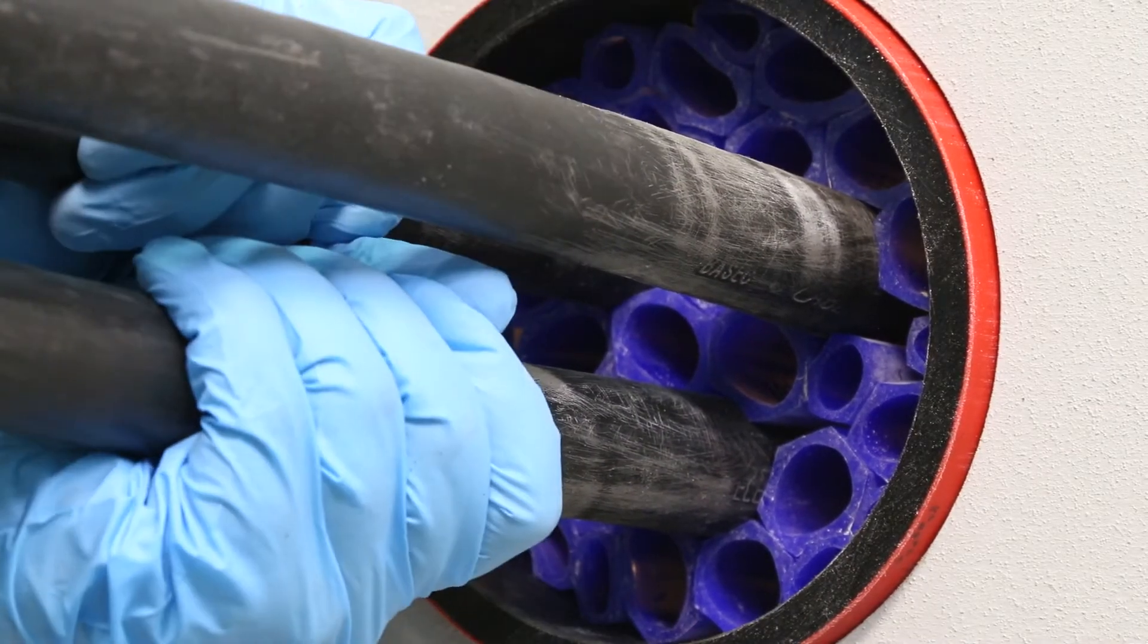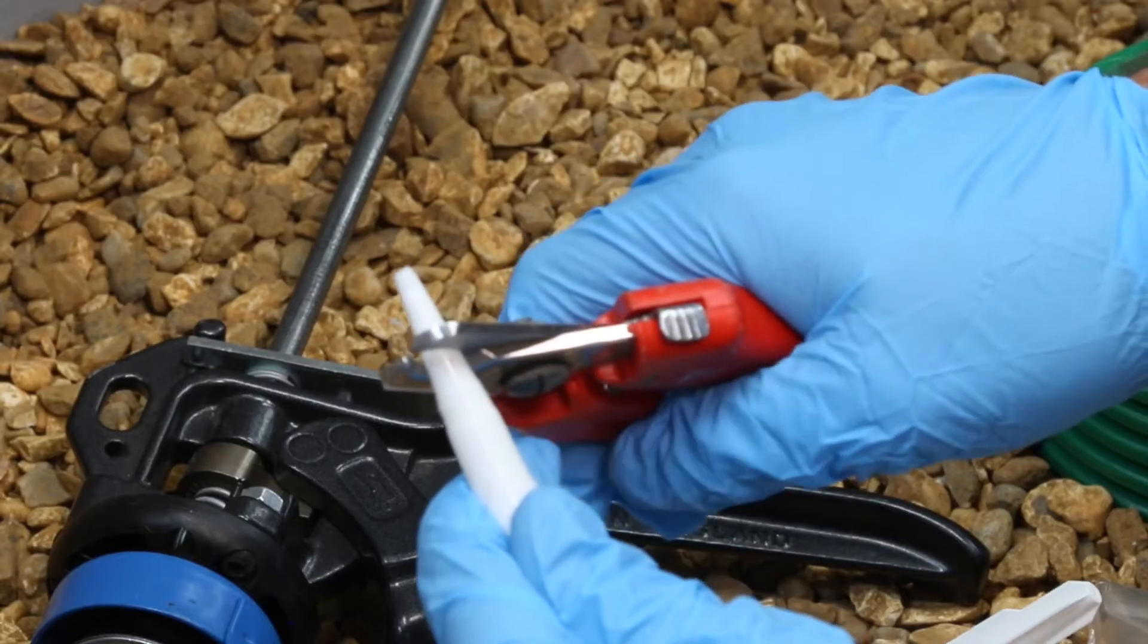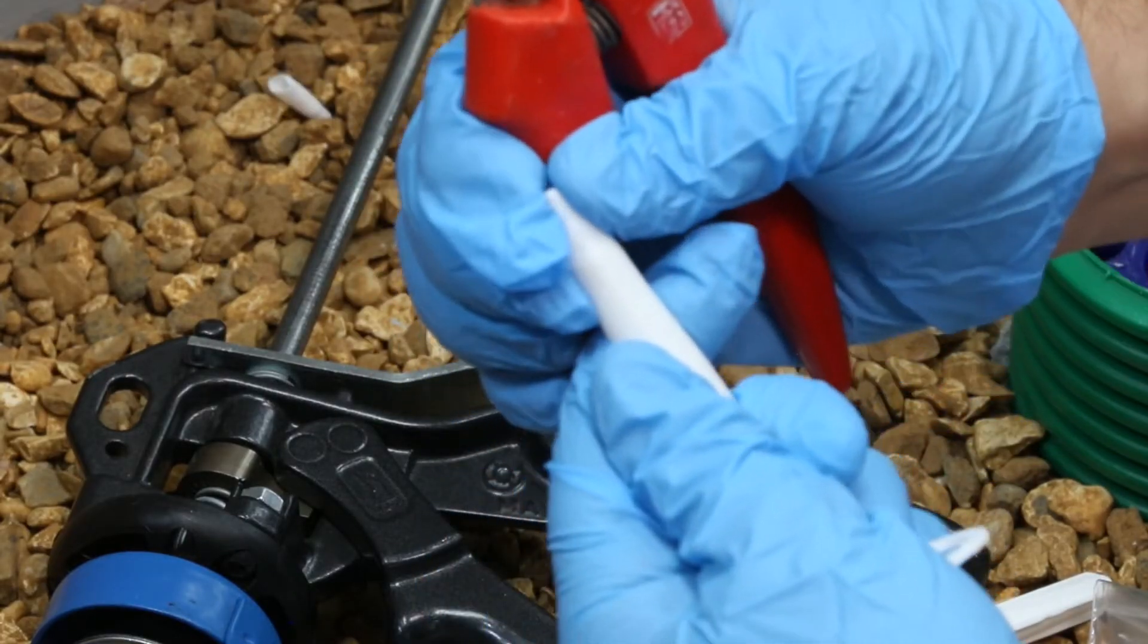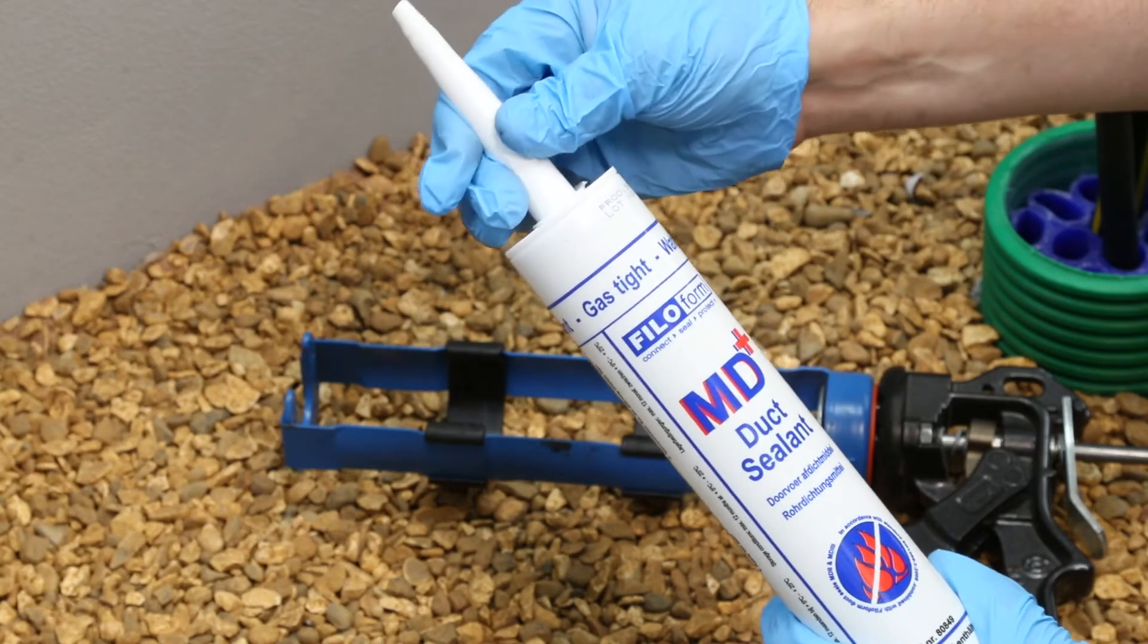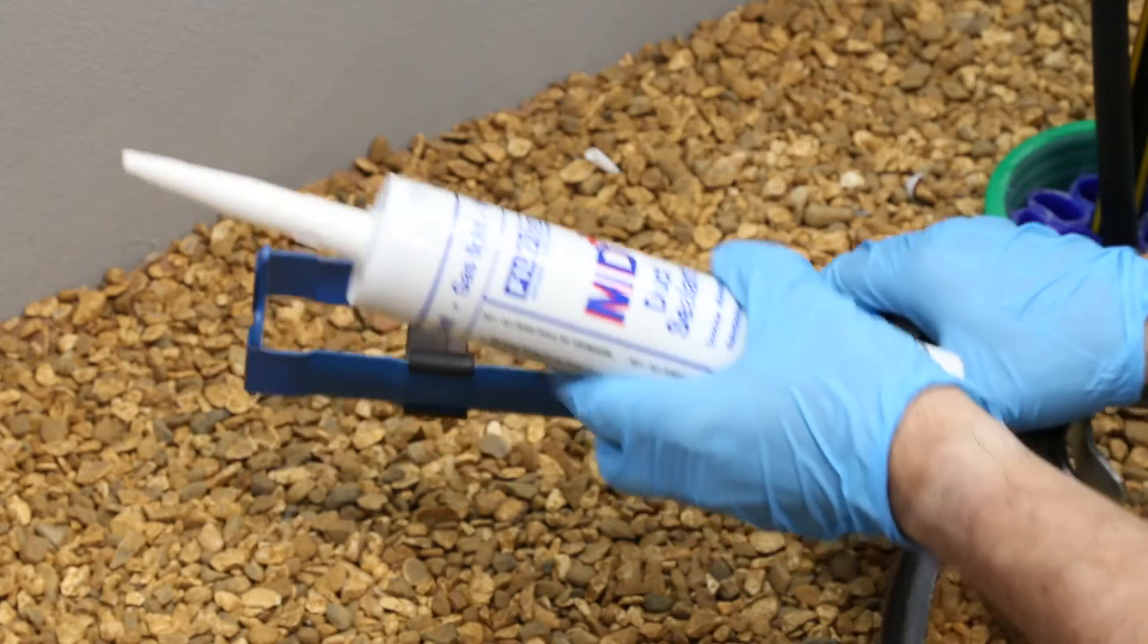Prepare the MD Plus tube by cutting the cartridge and the nozzle using a suitable cutting implement. Insert the cartridge into a high-ratio skeleton gun, which is available from Philoform.